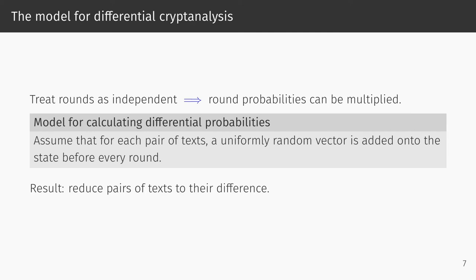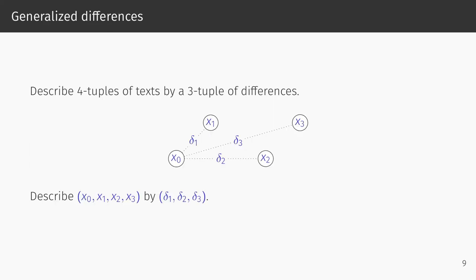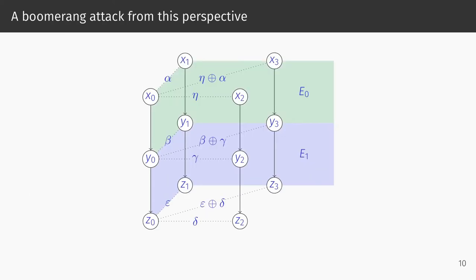In boomerang attacks, we don't deal with pairs of texts, but with quartets or four-tuples of texts. Apart from that, we are able to apply the same method of modeling the probabilities. In our model, we thus assume that for each four-tuple of texts, a uniformly random vector is added onto the state before every round. A result of this is that we are no longer interested in the exact values in the four-tuple, but only in their relative differences. For example, for a four-tuple x0 to x3, the intermediate differences are uniquely determined by the differences that the last three texts have with the first text. We can thus describe the four-tuple by the three differences delta1, delta2, and delta3. Here we can see what our previously discussed boomerang looks like from this perspective. If you would like to see how to precisely formulate the boomerang attack in this model, please check out the paper.